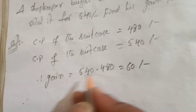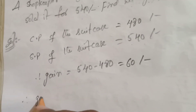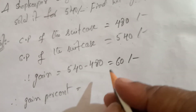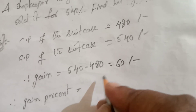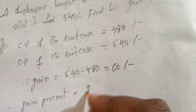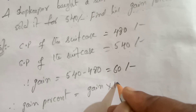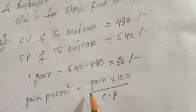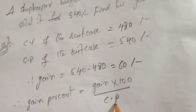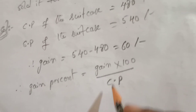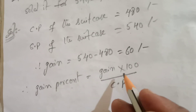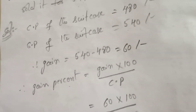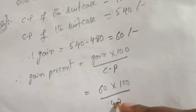To find the gain percent, use the formula: gain percent equals gain into 100 by CP. So gain percent equals 60 into 100 by CP. The gain is 60 and the CP is 480.